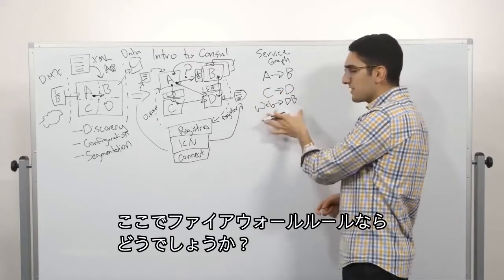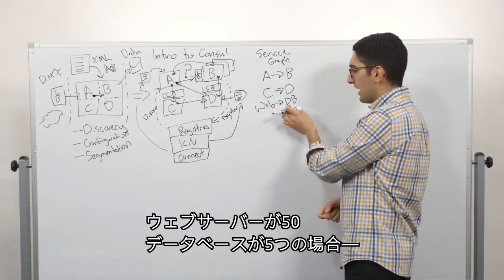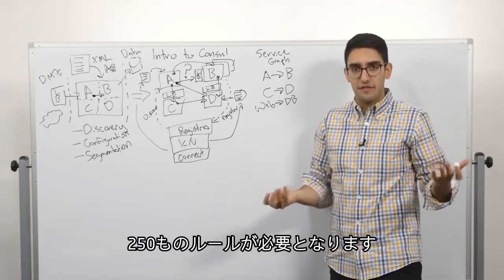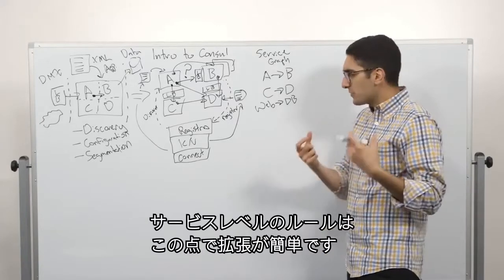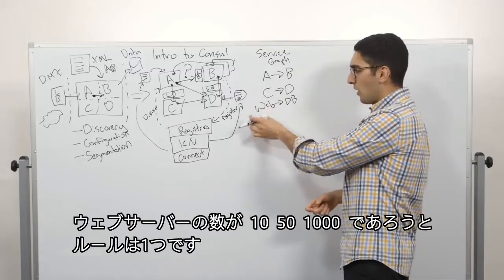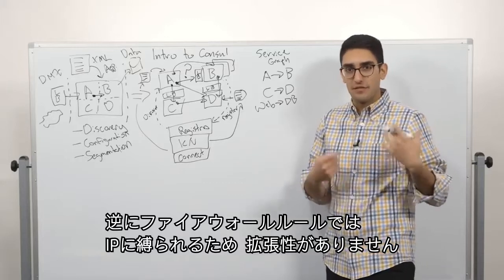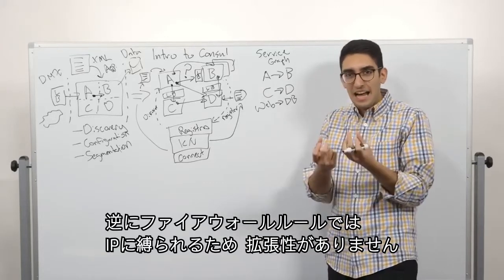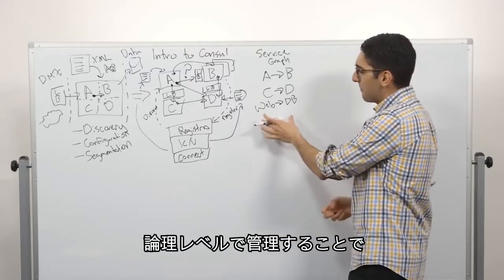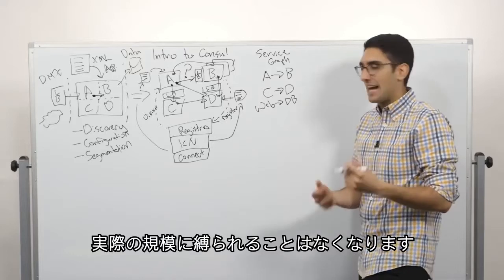The nice thing about expressing it at this layer is that the rule is scale-independent. And what I mean by that is, if I have a rule that says my web server should be allowed to talk to my database, that might be expressed simply. I can say web talks to database. But if I want to translate that to the equivalent firewall rules, well, if I have 50 web servers and I have five databases, that translates to 250 different firewall rules. And so this is what I mean is that while this rule is scale-independent, it doesn't matter if I have one, 10, 50, or 1,000 web servers. It's the same rule. Firewall rules are the opposite. They're very much scale-dependent and tied to the management unit, which is an IP. So let's elevate that management up to this logical level where we don't really have to be tied to the actual scale.